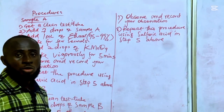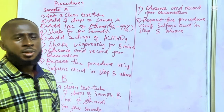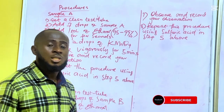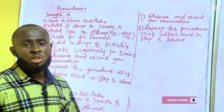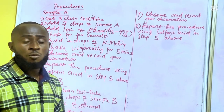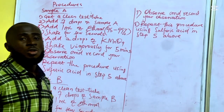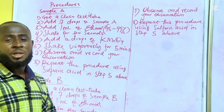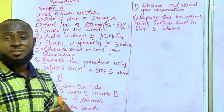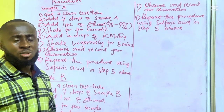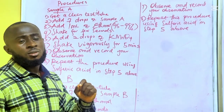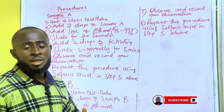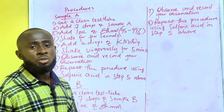This is the procedure for how you will carry out this experiment in the lab. You will be given two samples in liquid format — one is saturated and the other is unsaturated — called Sample A and Sample B. For Sample A: get a clean test tube, add seven drops of Sample A, then add 1 ml of ethanol (95–99% pure), shake for a few seconds, then add two drops of potassium permanganate. Be careful with permanganate as it can stain clothes and skin. Shake vigorously for about five minutes and expect a pink to brown color change. Observe and record your observation.